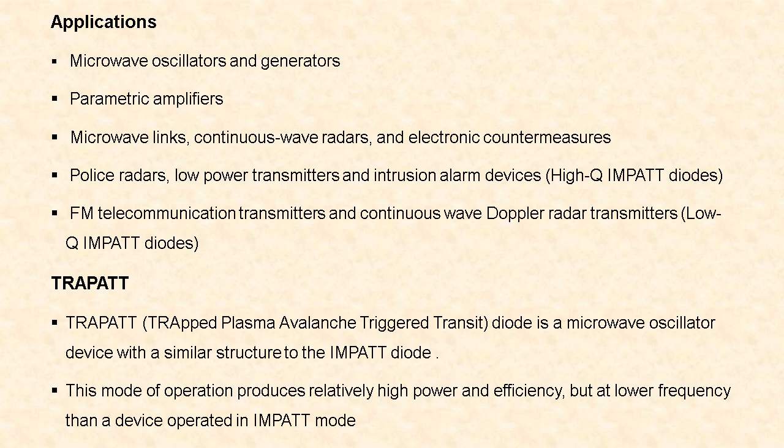Next let us see what is TRAPATT. TRAPATT is an acronym for Trapped Plasma Avalanche Triggered Transit diode. The TRAPATT diode is a microwave oscillator device with a similar structure to that of the IMPATT diode. Its mode of operation produces relatively high power and efficiency but at a lower frequency than the device which is operated in IMPATT mode.